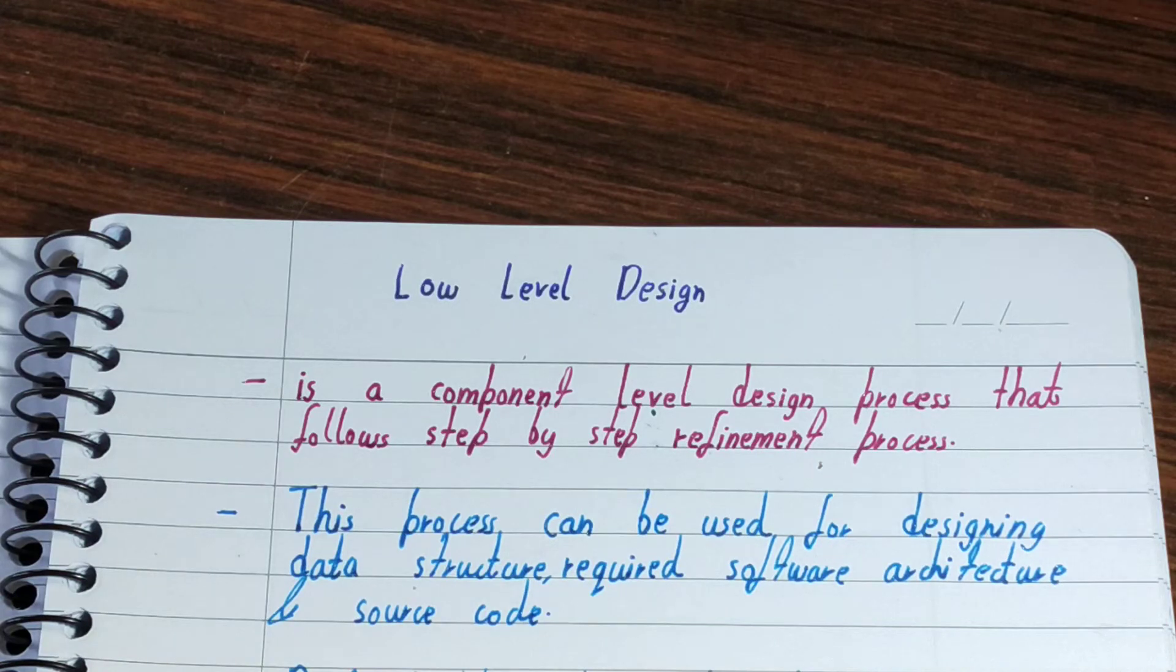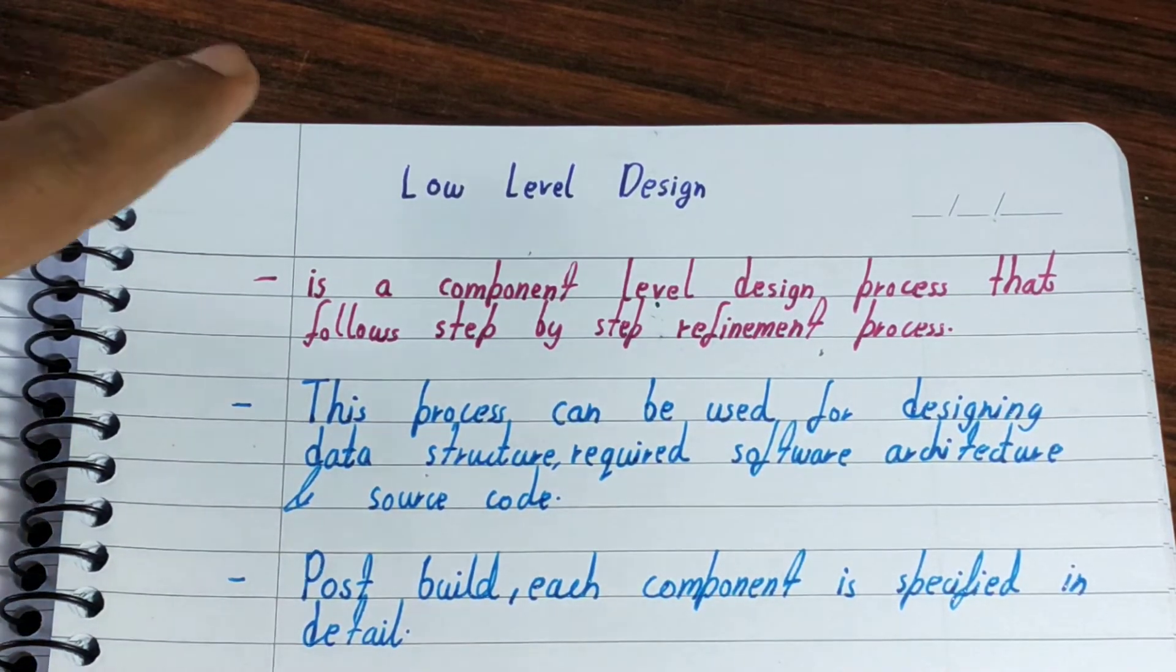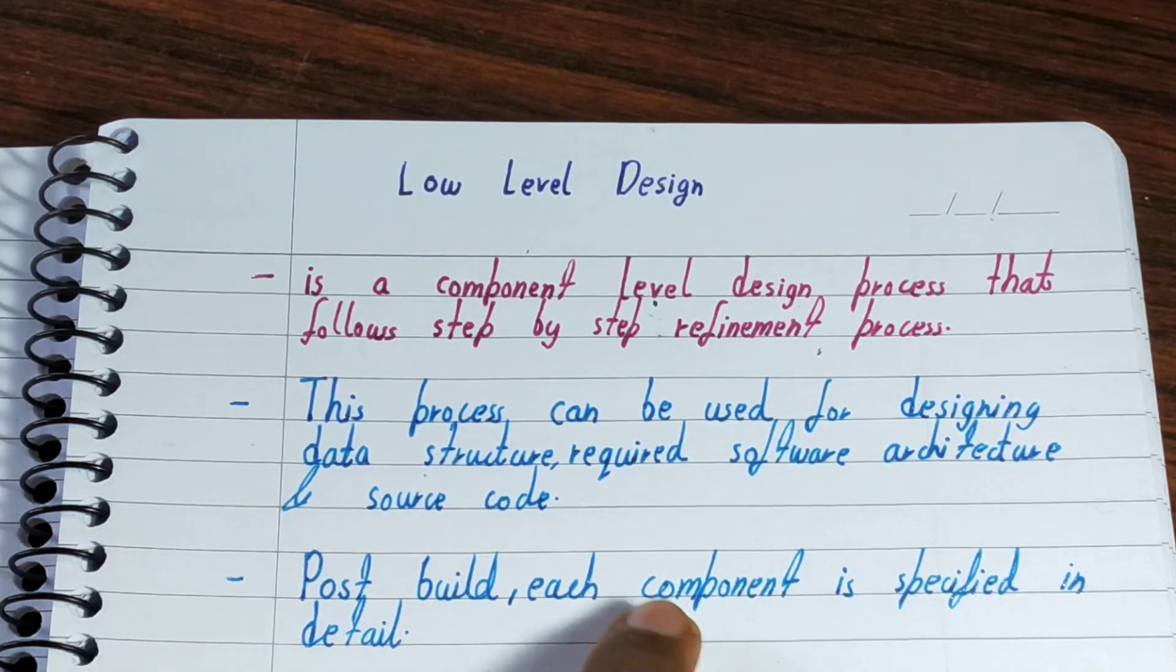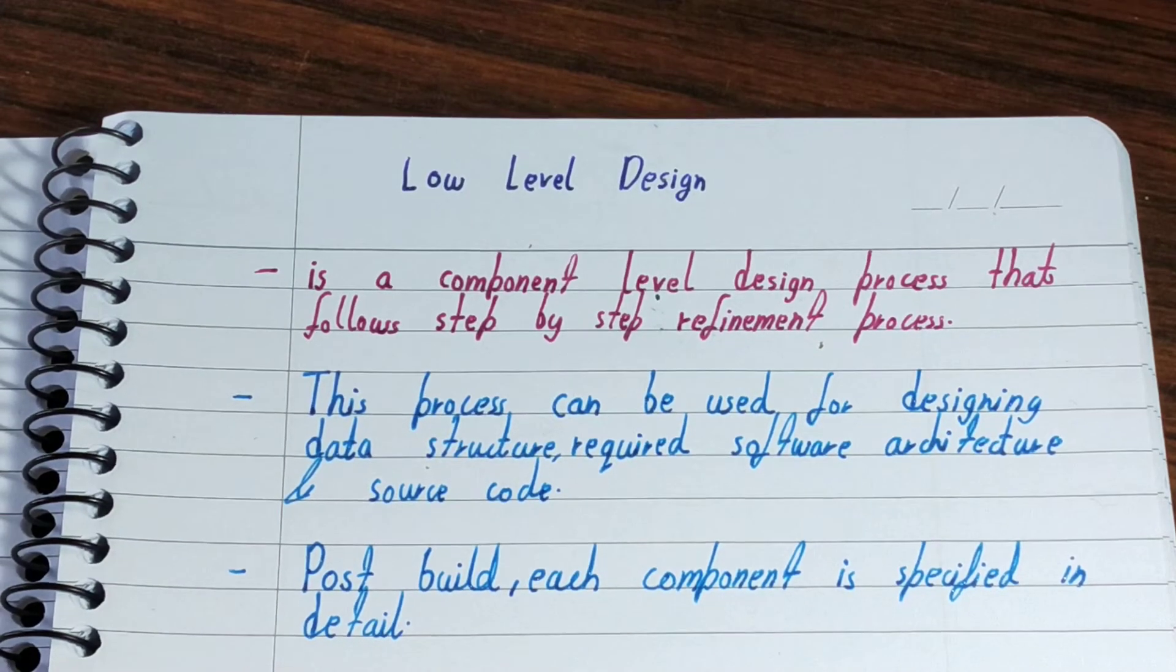Once we are complete with components - that this component will give us this functionality and we have the source code of that - then we can start working on the high level design. After you have completed your low level design, you have the detailed overview about each component before developing a software. This is very beneficial when you are developing big software.